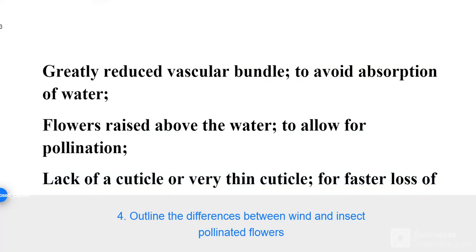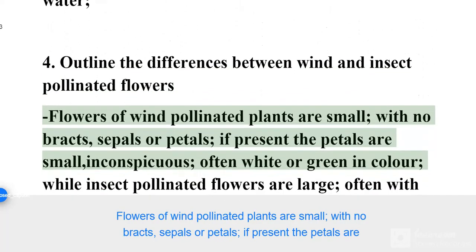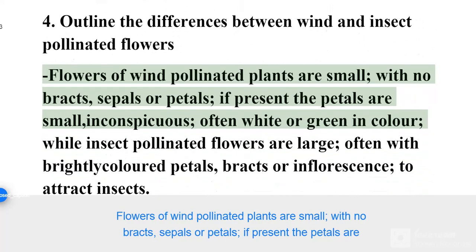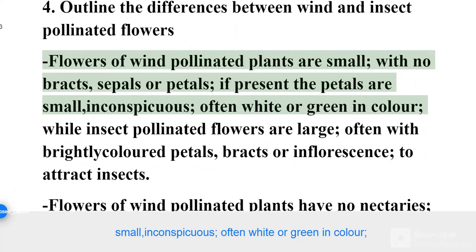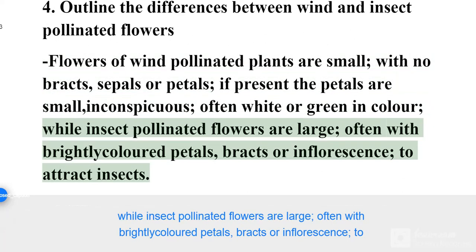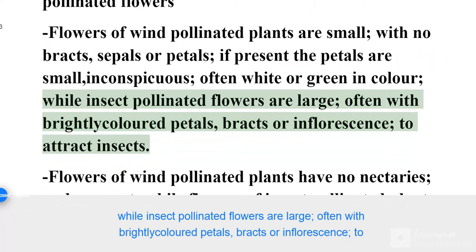Question 4: Outline the differences between wind and insect pollinated flowers. Flowers of wind pollinated plants are small, with no bracts, sepals or petals; if present, the petals are small and inconspicuous, often white or green in color. While insect pollinated flowers are large, often with brightly colored petals, bracts or inflorescence, to attract insects.